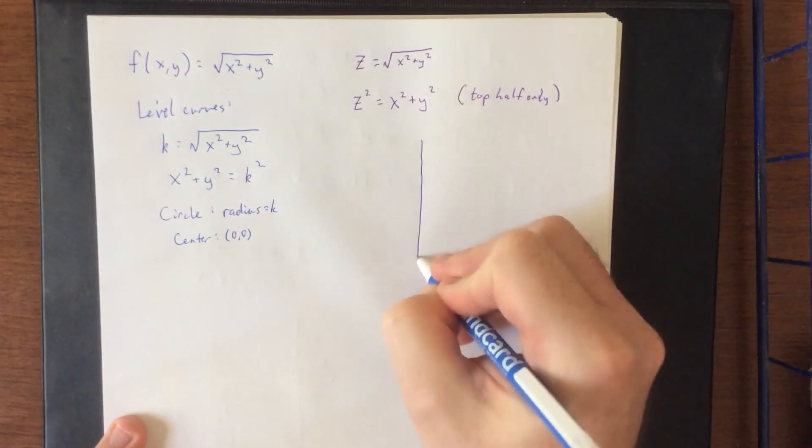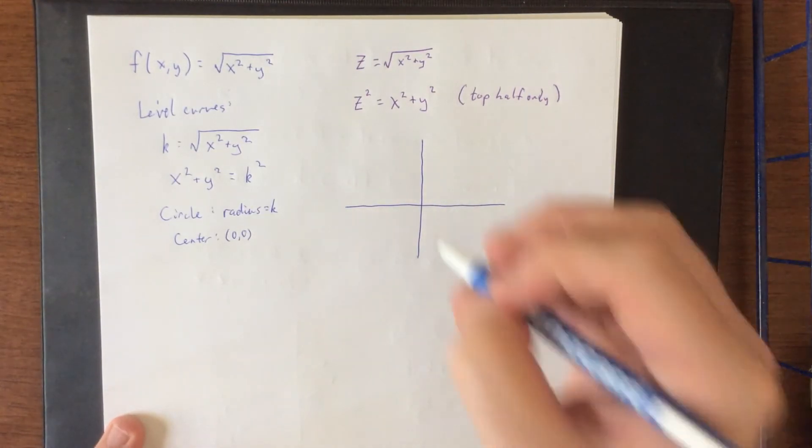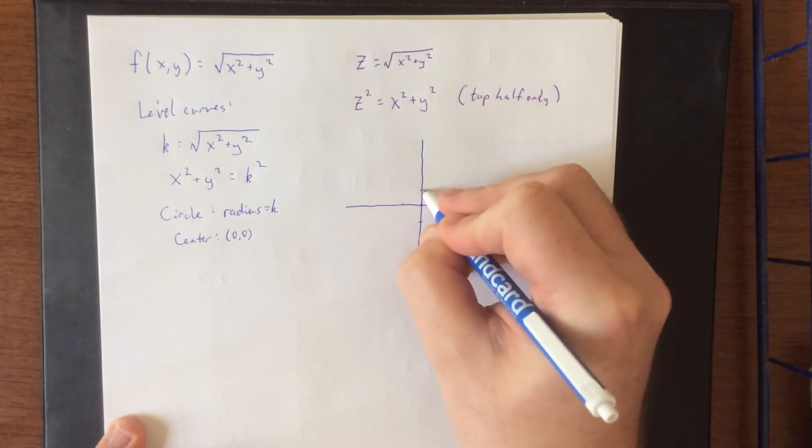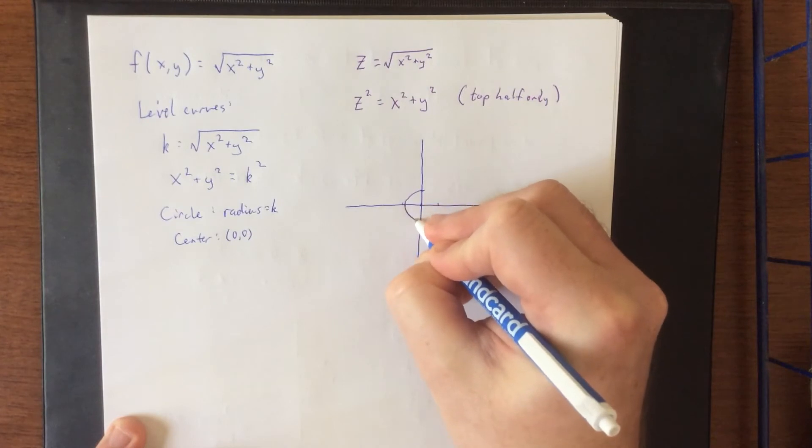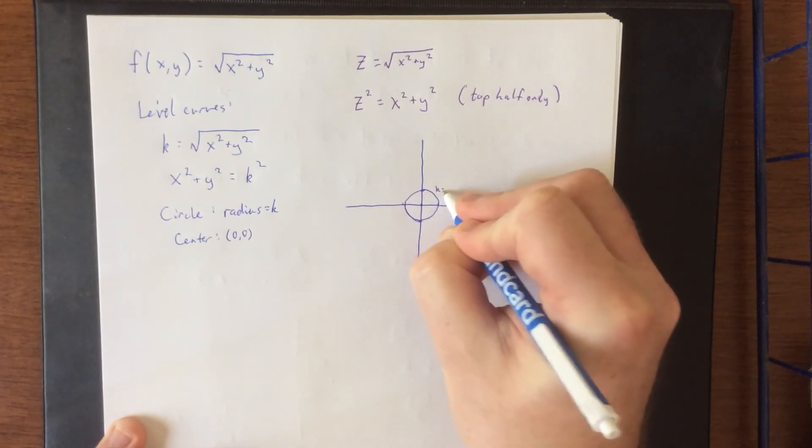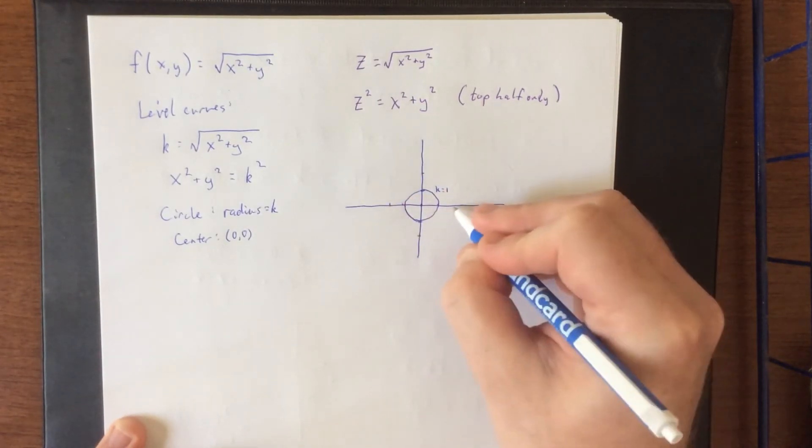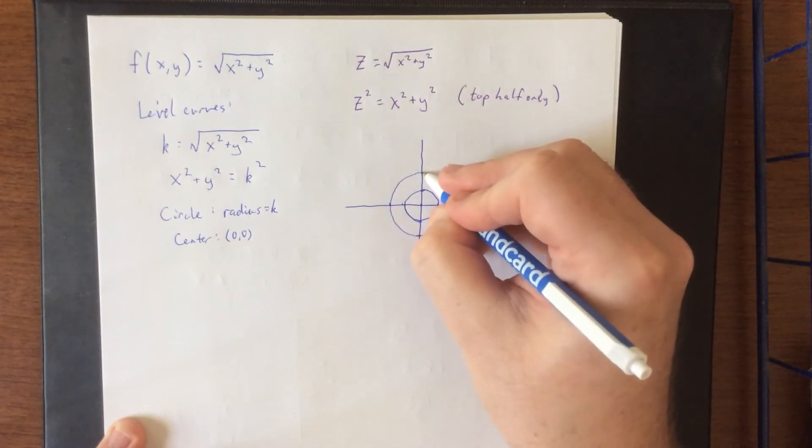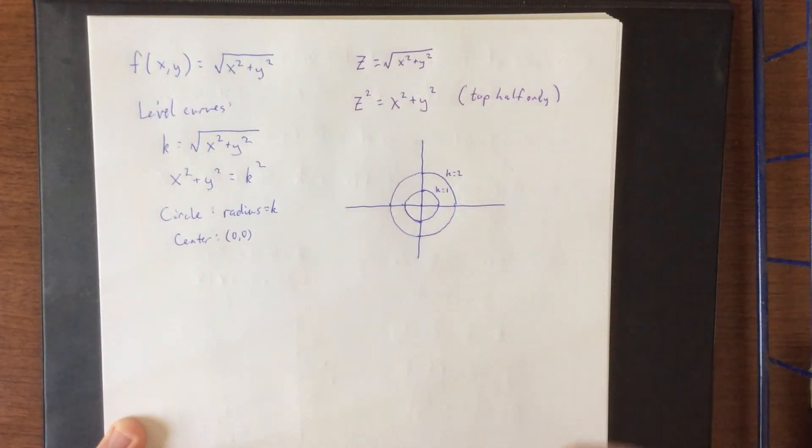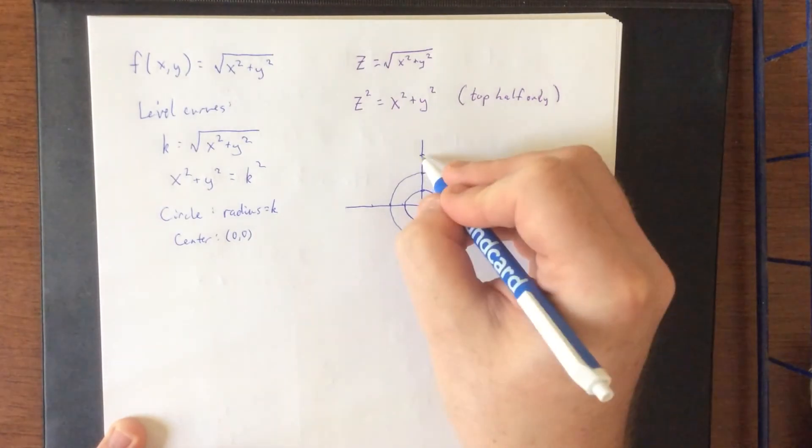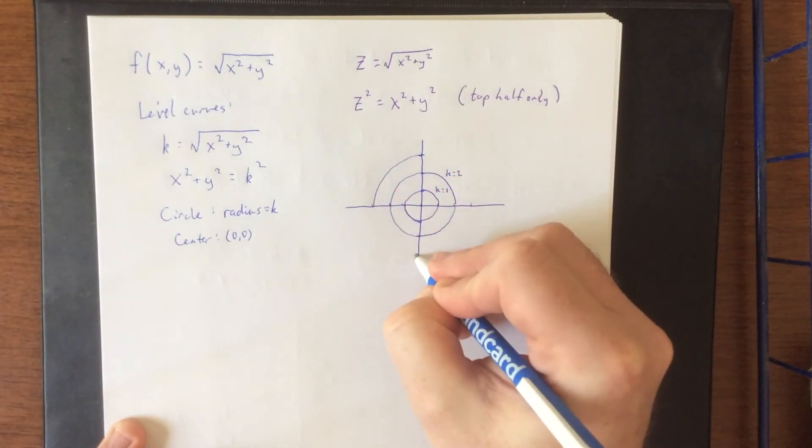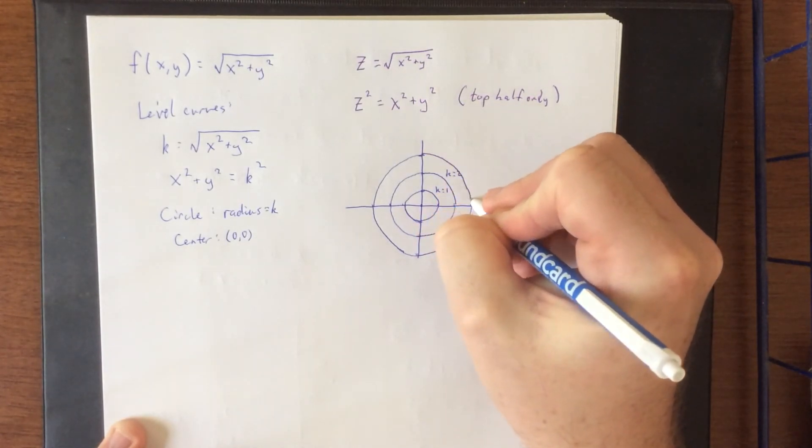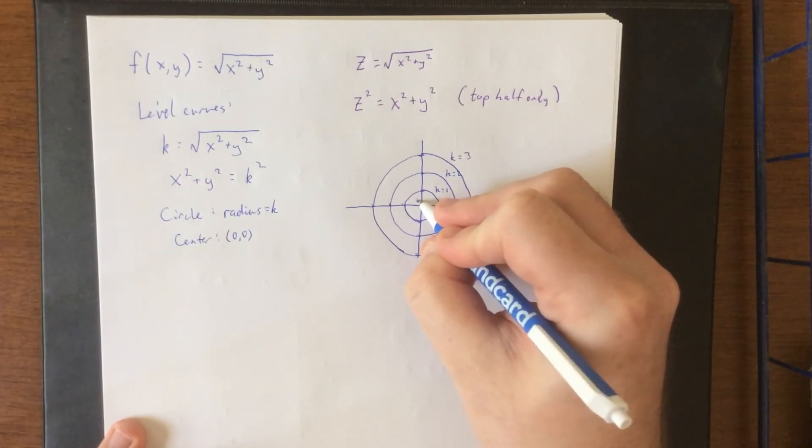So, in the x-y plane, if we wanted to do k equals 0, 1, 2, and 3, k equals 0 would correspond to just a point at the origin. Then, k equals 1 would correspond to a circle of radius 1. k equals 2 would correspond to a circle of radius 2. Then, k equals 3 would correspond to a circle of radius 3, also centered at the origin. Then, all the way in the middle here, that would be k equals 0.